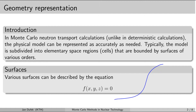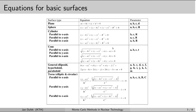If we have some surface and we evaluate a point on the surface using this equation, then the equation will return zero exactly. If we evaluate a point which lies outside of the surface, this function will return a number which is different from zero. On this slide you can see a list of some basic surface types such as planes, spheres, cylinders, and others, along with the corresponding equations by which they are exactly determined.